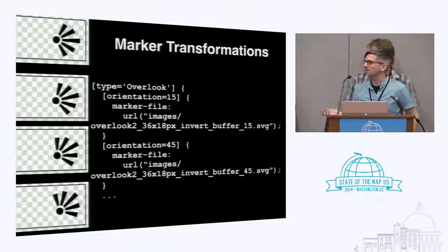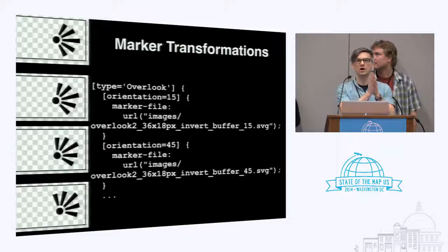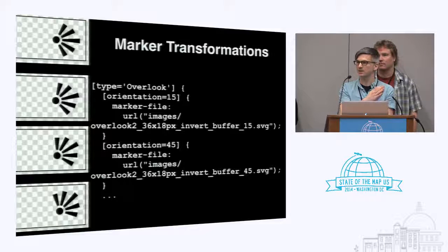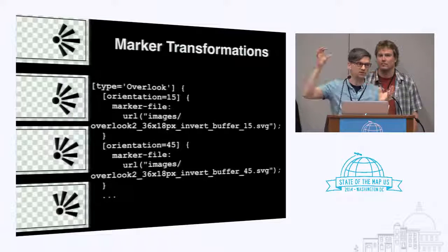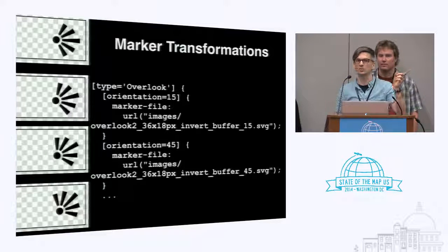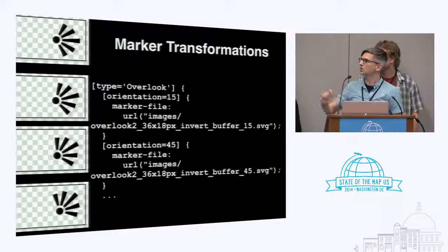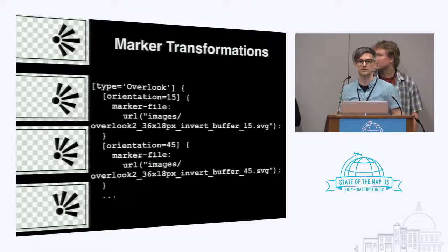In principle you could rotate one overlook symbol to point in the correct direction, except that using the shield symbolizer would also rotate the text — so the label of the overlook would be tilted if the overlook is pointing that way. So we just created a whole bunch of different overlook icons all pointing in different directions.